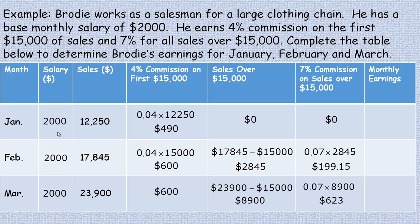To get monthly earnings we add three values: the base salary, the commission at four percent, and the commission at seven percent. For January: two thousand plus four hundred ninety equals two thousand four hundred ninety dollars.